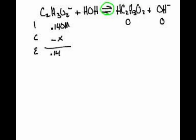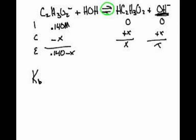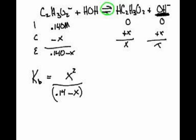0.140 minus X, plus X, plus X. So the Kb — because we produced hydroxide — equals X squared over 0.140 minus X. I cannot use Ka here, ladies and gentlemen. So if I look on the table, I need to find the Ka of acetic acid to then calculate the Kb of acetate using Ka times Kb equals Kw.